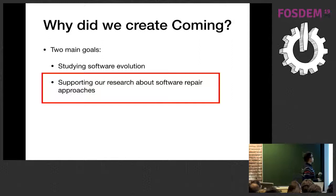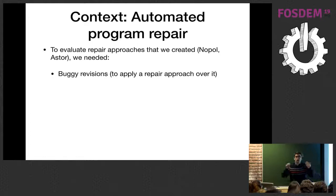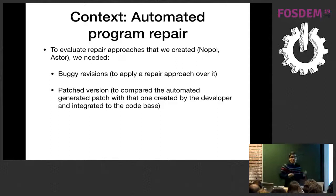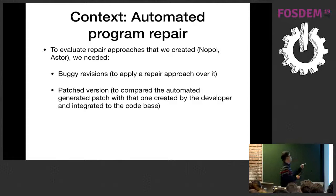The second part of our research was supporting automatic software repair. We need bugs and buggy revisions to apply our repair approaches and test our tools. We also need the patched revisions. We need the purification to know which patch the developer wrote to repair the bug, so we can compare our automatically generated patches with the developer's patches.